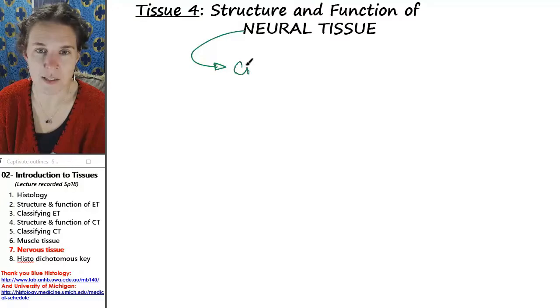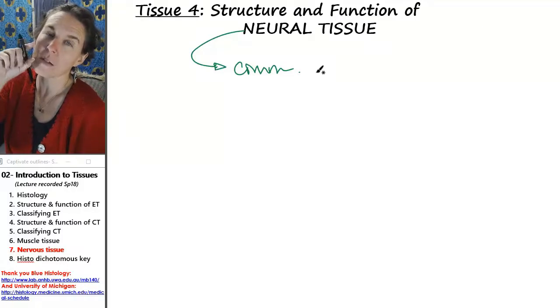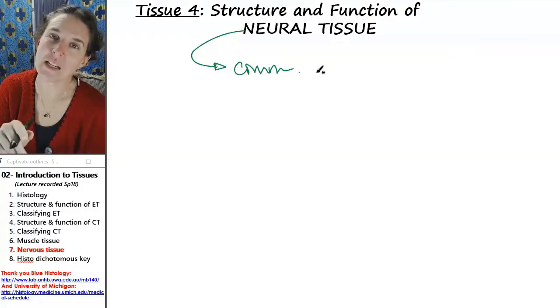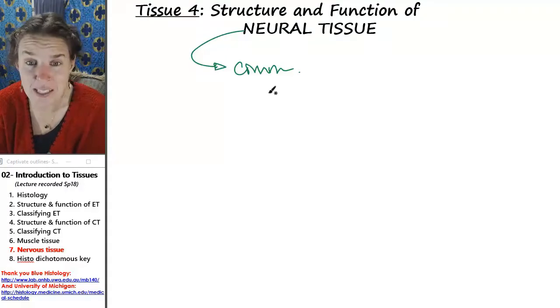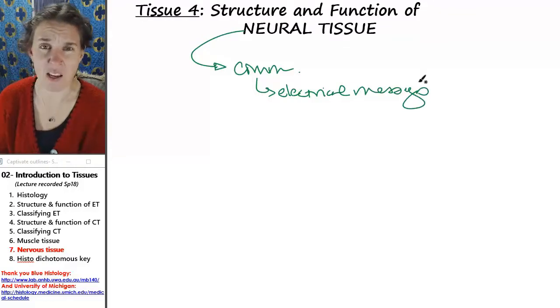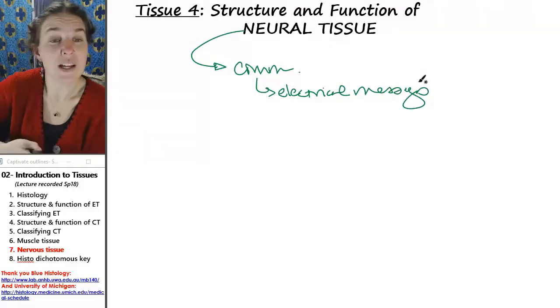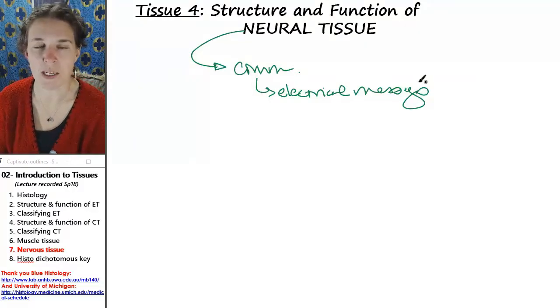Neural tissue is about communication. Everything in your body, like me talking, happens because neural tissue sends electrical messages. Neural tissue communicates with electricity throughout the body. It's crazy. Neural tissue tells your muscles to contract. That's how you move. Otherwise, it wouldn't happen.